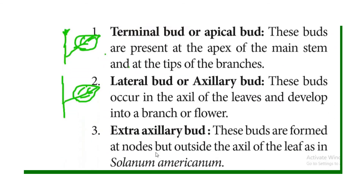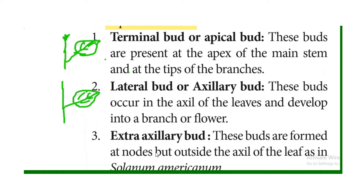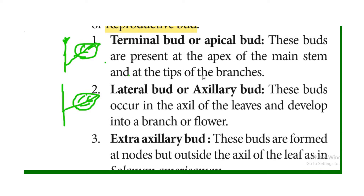Types of buds. First one: terminal buds or apical buds. That is one plant's stem tip or branch tip, that is the main axis tip. On the apex of the main stem or branch tip, this portion is terminal or apical buds.